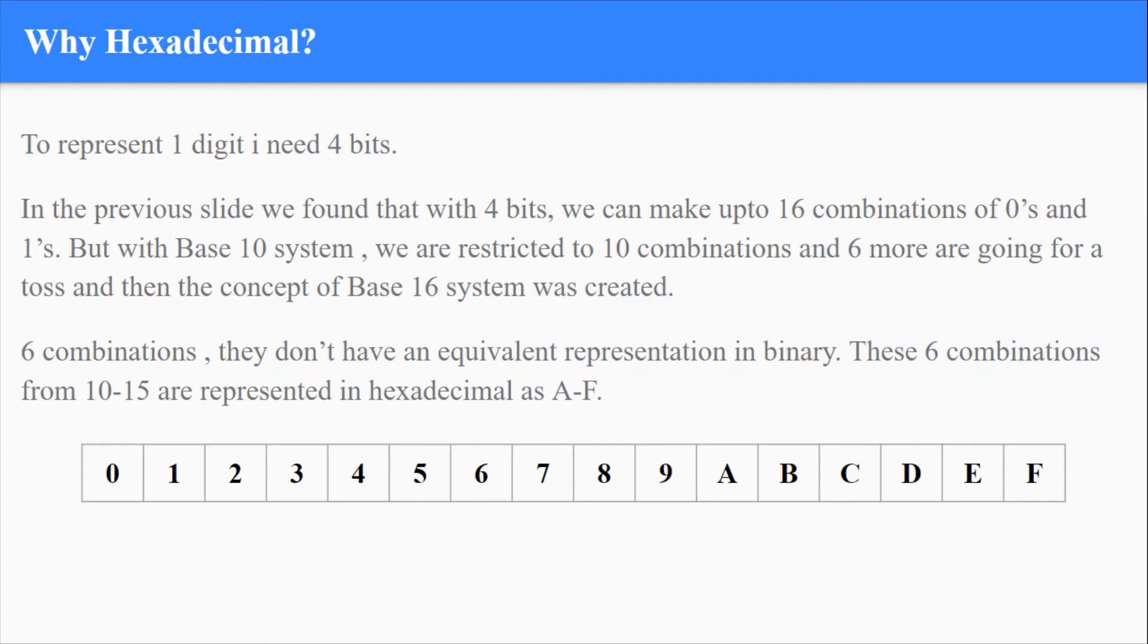If we go in decimal, you will be having only 0 to 9, they are of 1 digit. But later A, B, C, D, E, F were added to represent 10 to 15, and this as a whole is a hexadecimal number system.